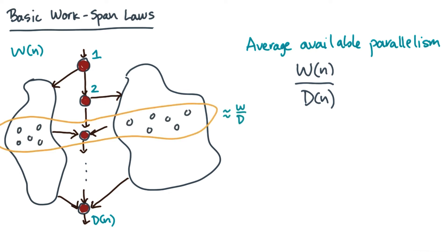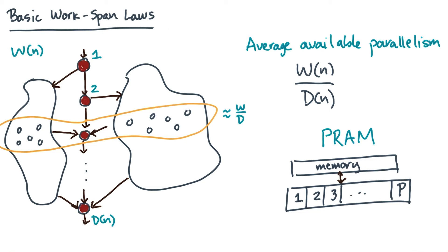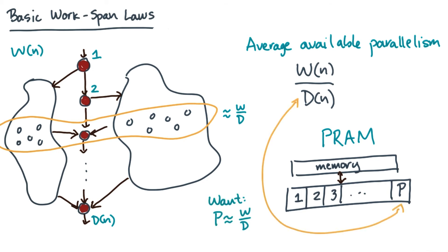So what does that imply? Suppose I give you a PRAM with p processors. How many processors should you use? It looks like it would be nice to have about w over d processors. And if that's the case, you can basically keep the processors busy on average.